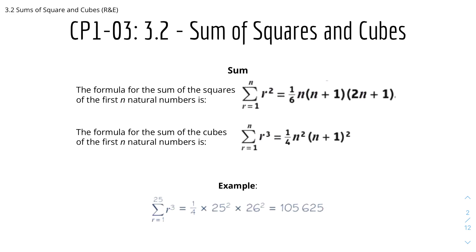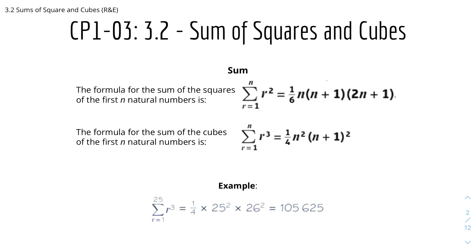We'll get started with the sum of squares and cubes. Starting with the squares — the formula for the sum of the squares for the first n natural numbers is: the sum of r squared from r equals 1 to r equals n is equal to one-sixth times n times (n+1) times (2n+1).